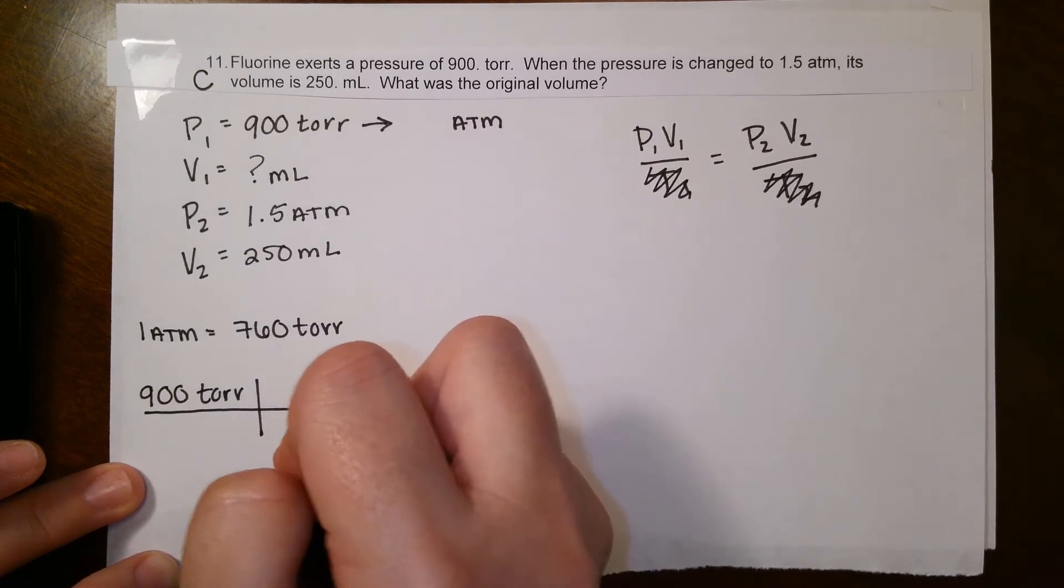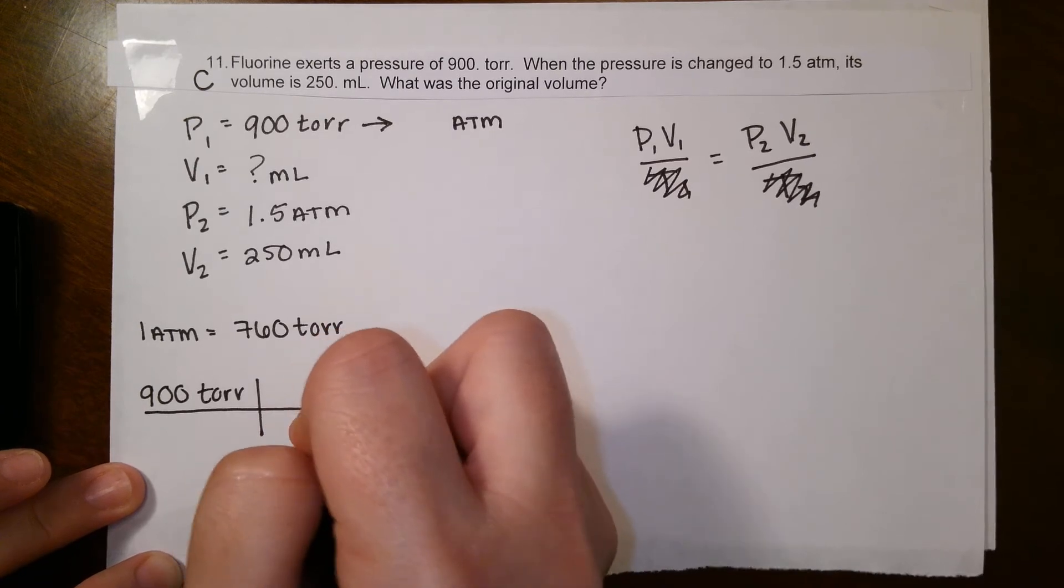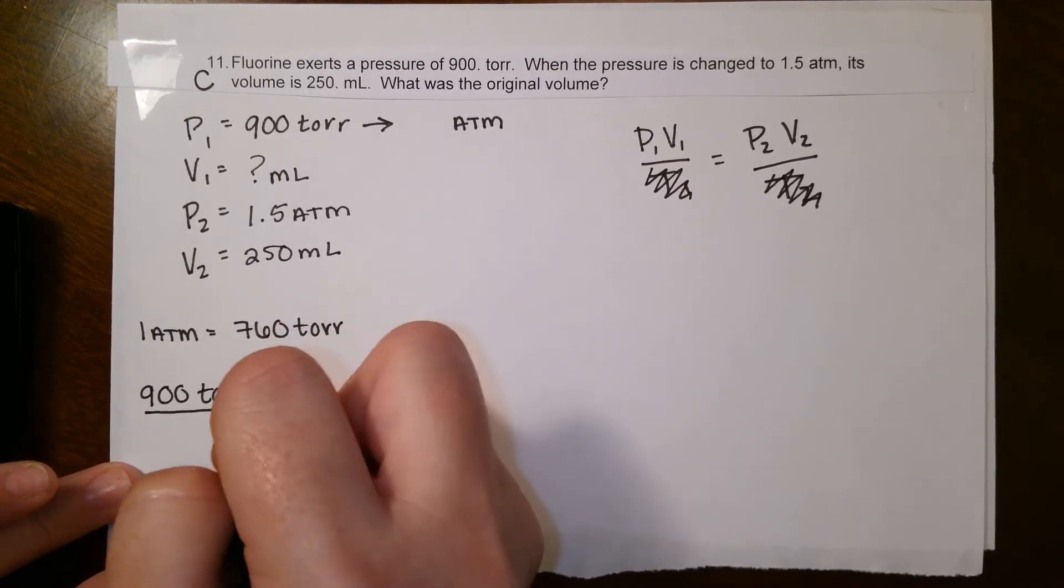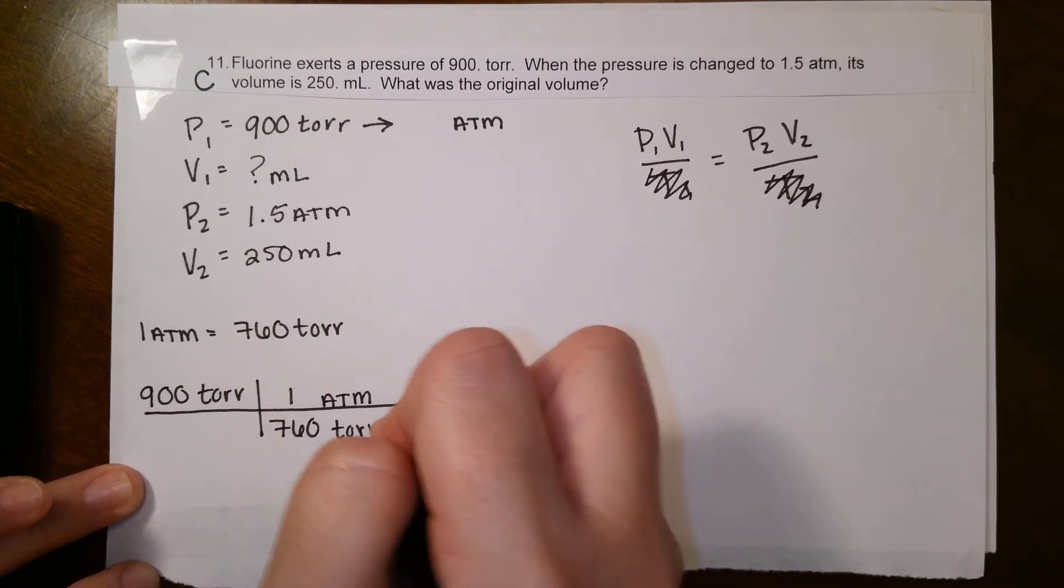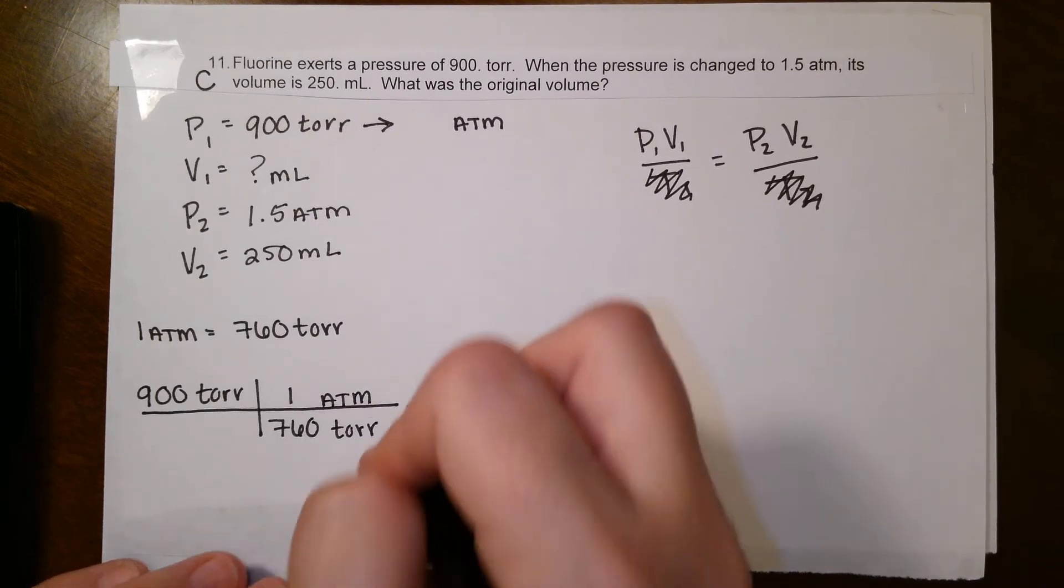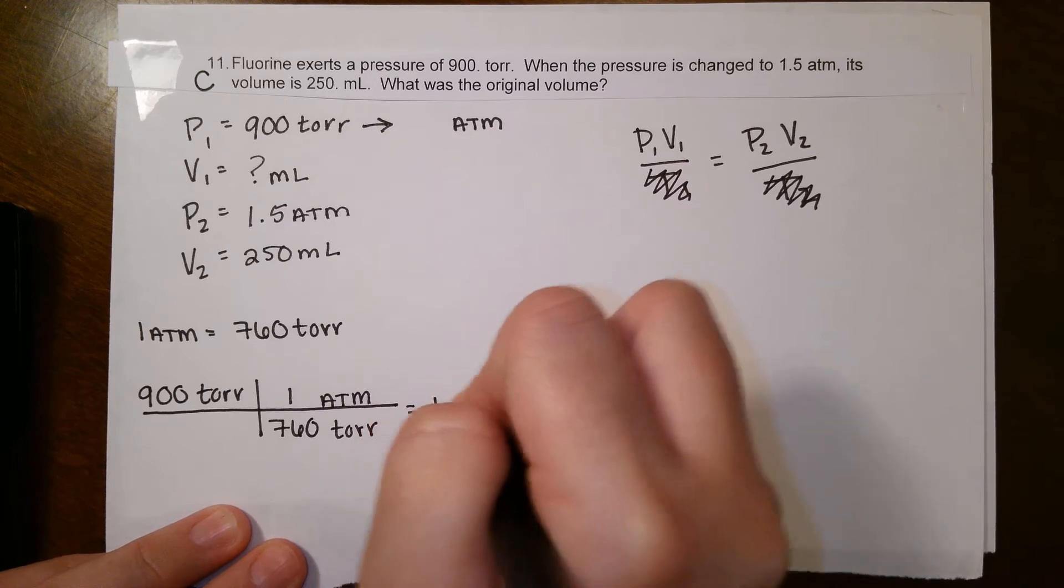Torr up top means it's going to the bottom. We're trying to convert it to atm, and that conversion is that 1 atm is equal to 760 torr. So we plug it in, we say 900 times 1 divided by 760, and we get that 900 torr is equal to 1.18 atm.